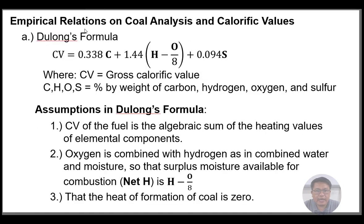For the empirical relation on coal analysis and calorific values, we have Dulong's formula. The gross calorific value of coal equals: 0.338·C + 1.44·(H − O/8) + 0.0944·S, where C, H, O, and S are in percent by weight of carbon, hydrogen, oxygen, and sulfur.